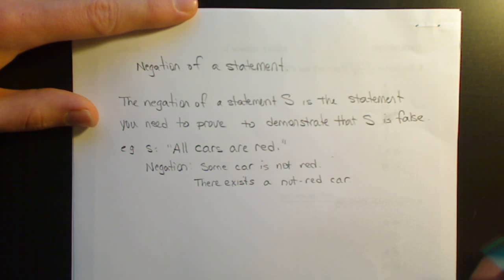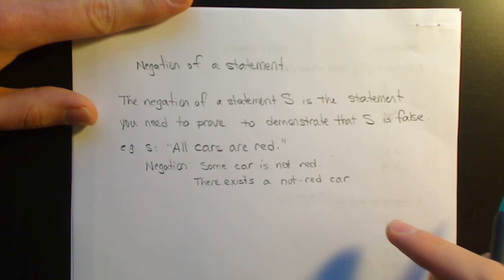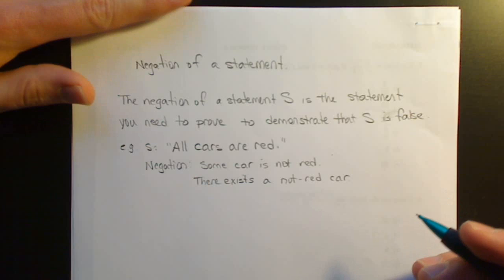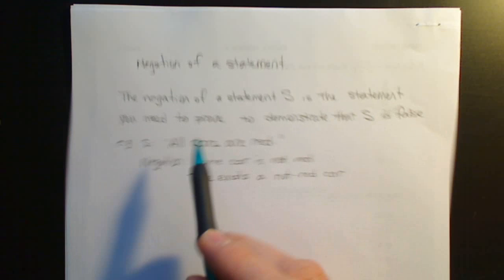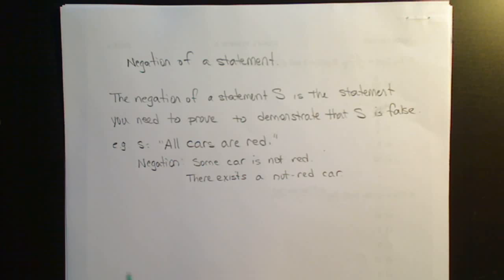Now, this proof would be something along the lines of, hey, look at that blue car. That's not red. You're wrong. That's how a negation of a statement works. To prove something that says all, you need to have one counterexample.